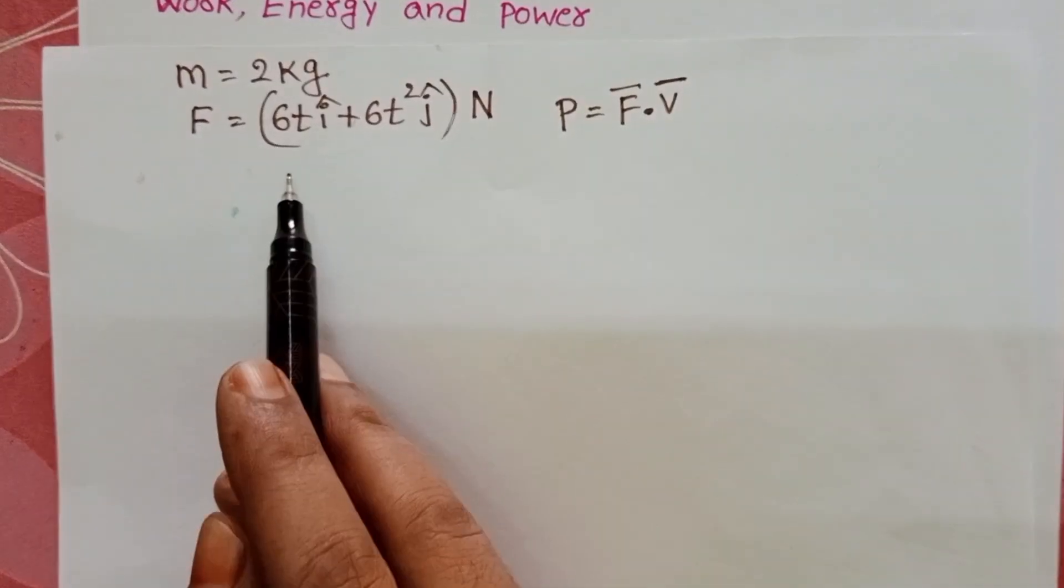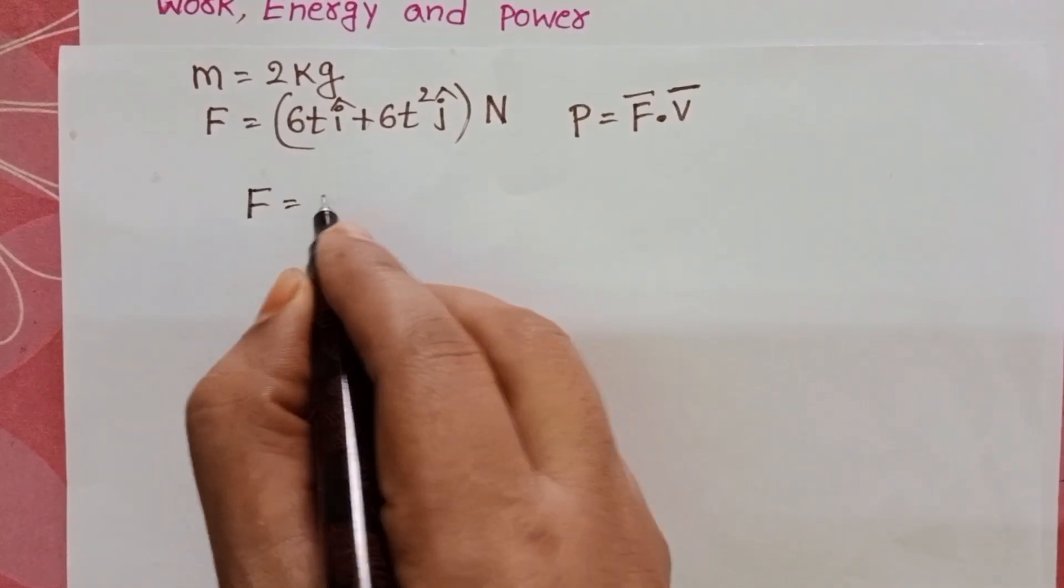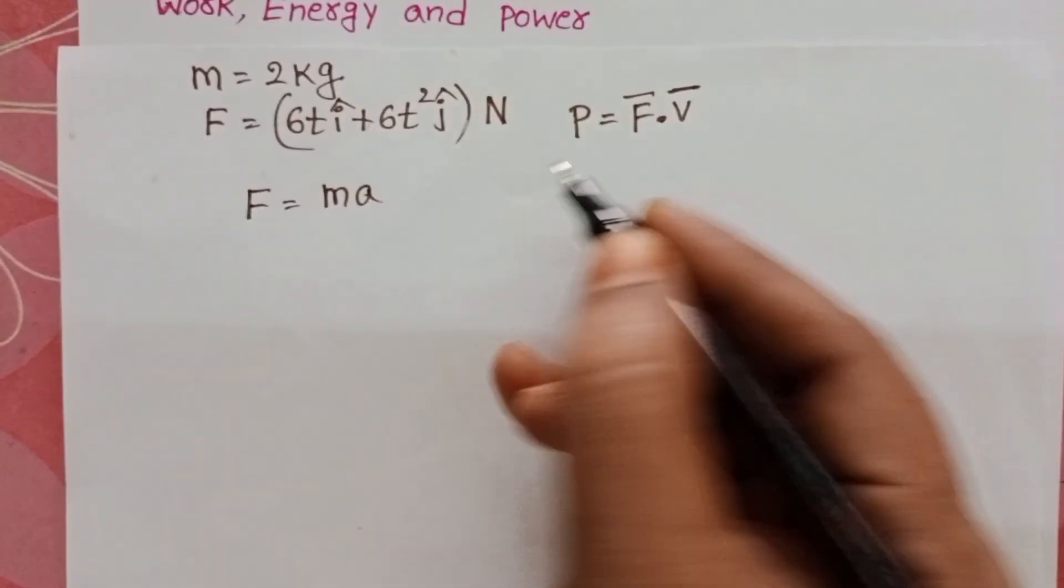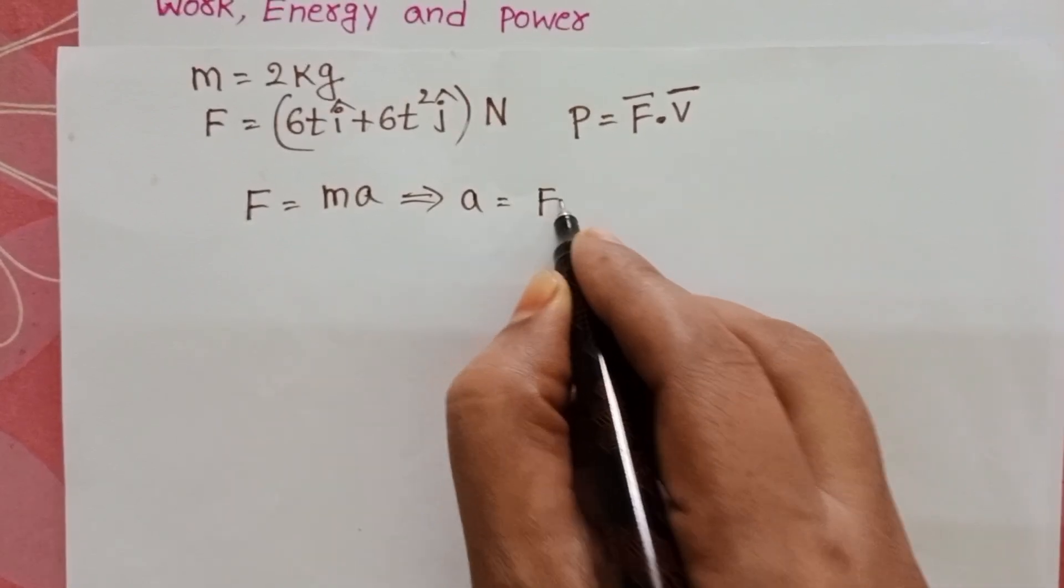Using the given information, first we find the velocity. Force equals mass times acceleration. Therefore, acceleration equals force divided by mass.